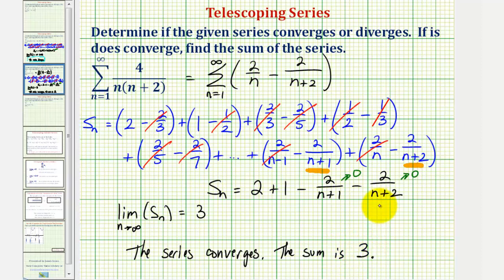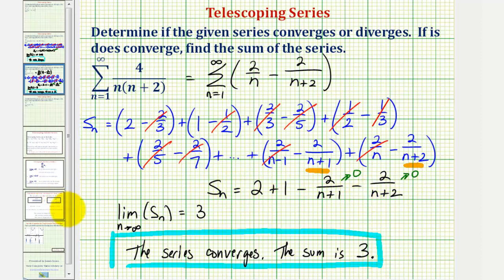Sometimes it can be challenging to find the formula for the partial sum. My suggestion is to simplify two terms at a time, and then try to recognize the pattern, because recognizing the pattern is key to finding the correct formula for the partial sum. I hope you found this helpful.